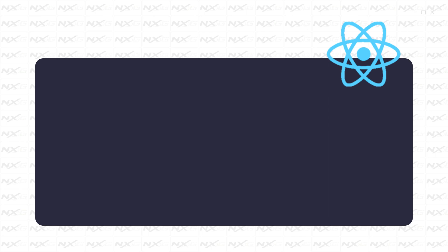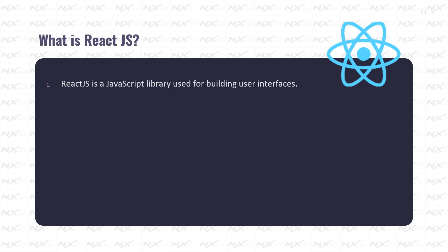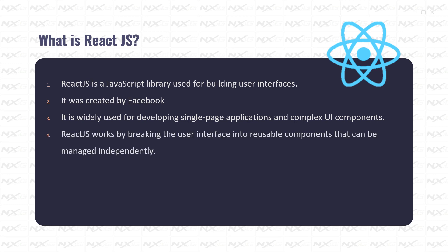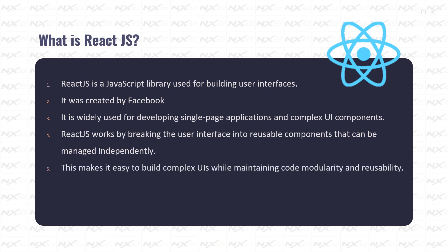Let's start with React.js. What is React.js? React.js is a JavaScript library used for building user interfaces. It was created by Facebook and is widely used for developing single-page applications and complex UI components. React.js works by breaking the user interface into reusable components that can be managed, making it easy to build complex UIs while maintaining code modularity and reusability.